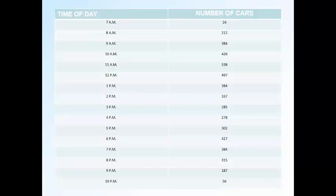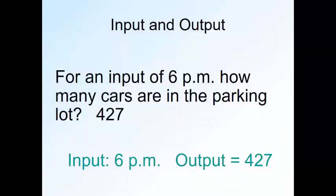Now find the related data element which is the output, the number of cars. Got it? For an input of 6pm there are 427 cars in the parking lot and that is the output.